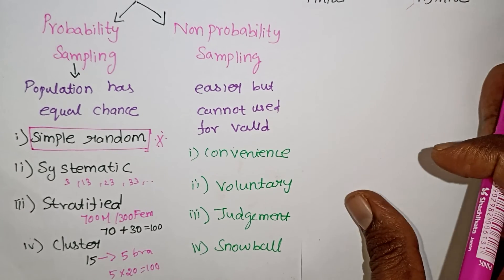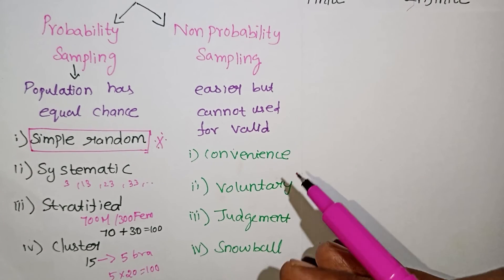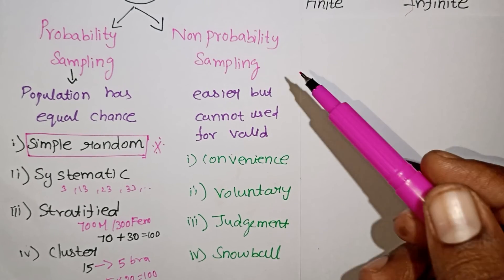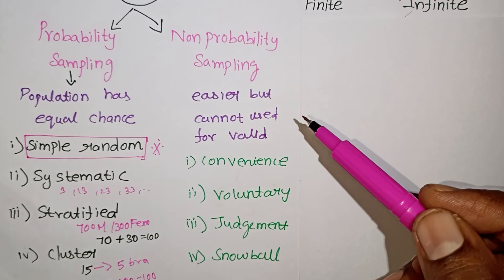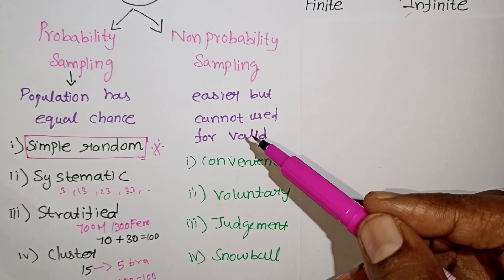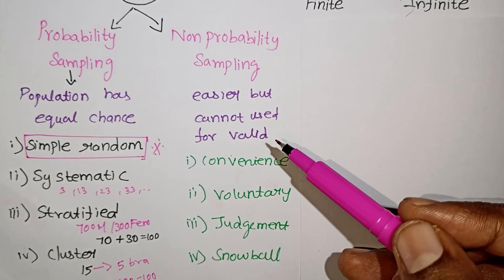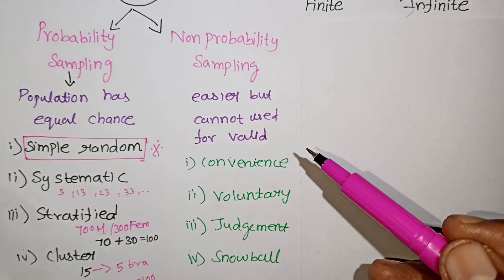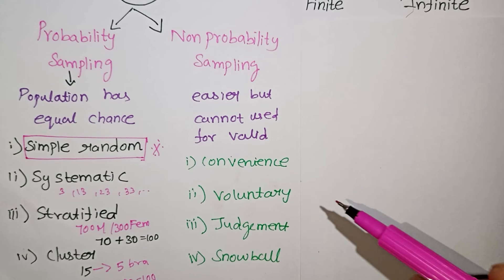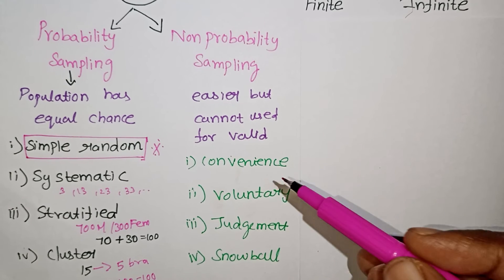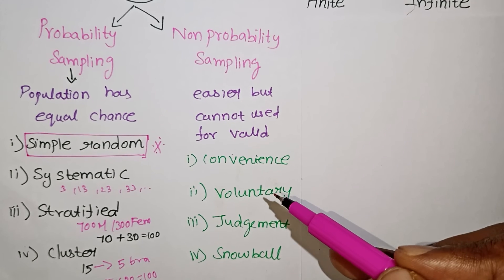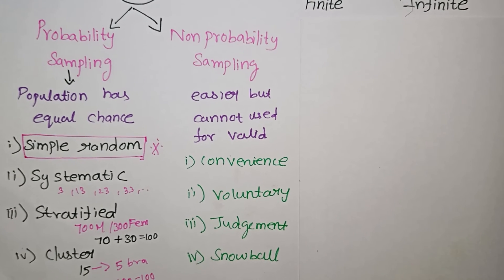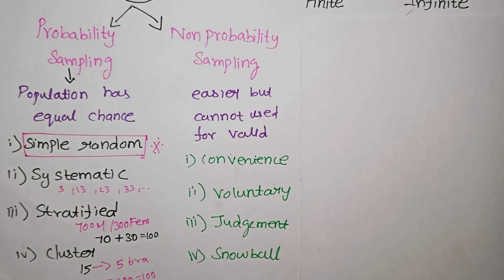This gives a maximally valid answer. Non-probability sampling is easy and cheaper, but does not always give a valid answer. There are 4 types: convenience, voluntary, judgment, and snowball sampling.